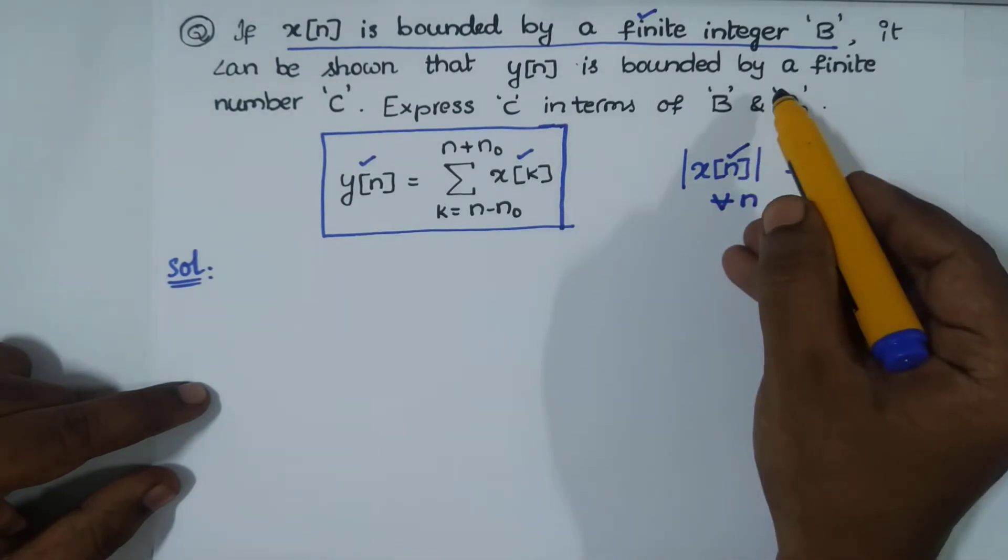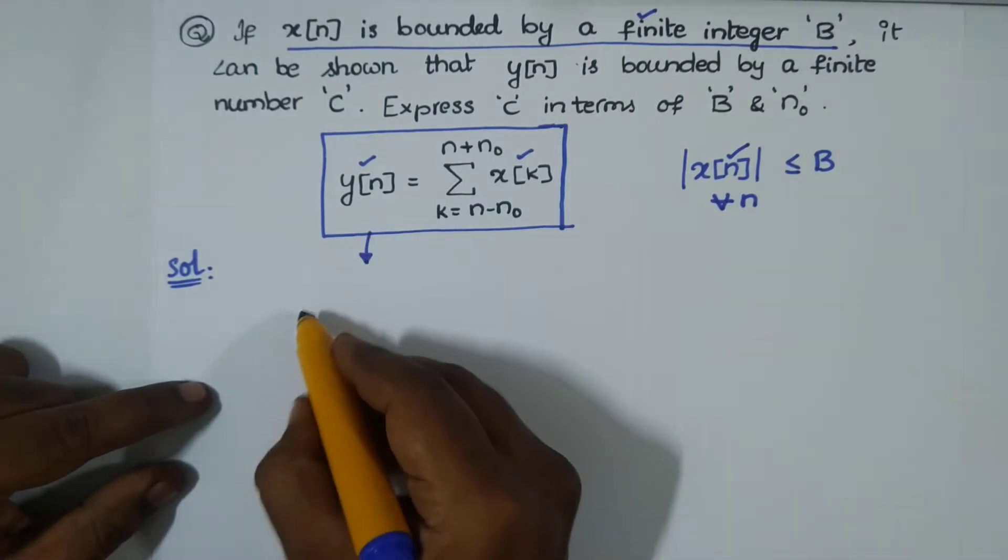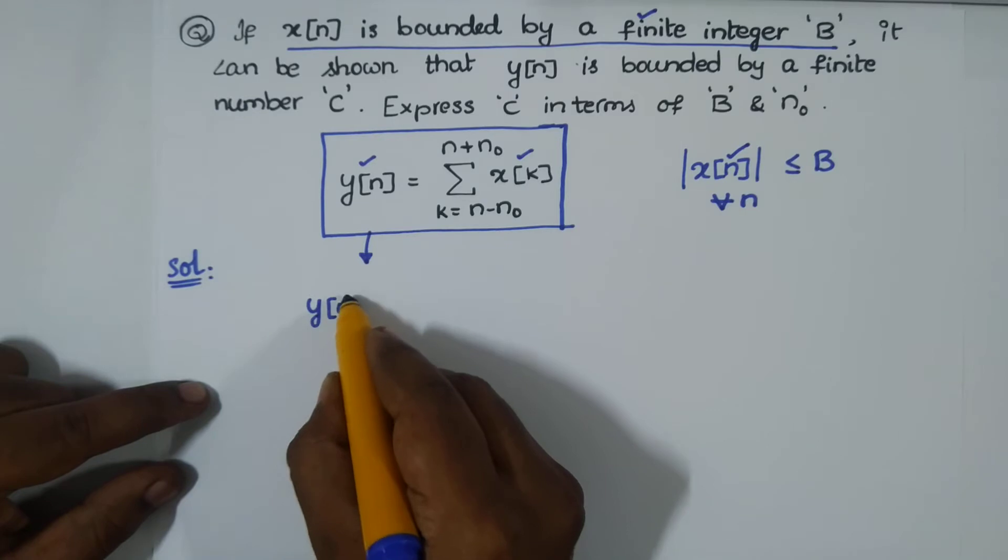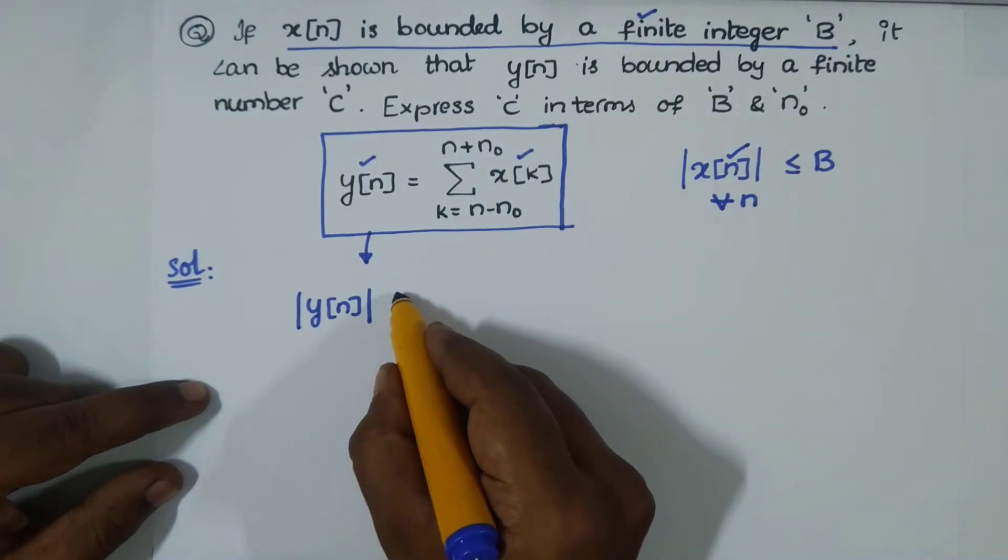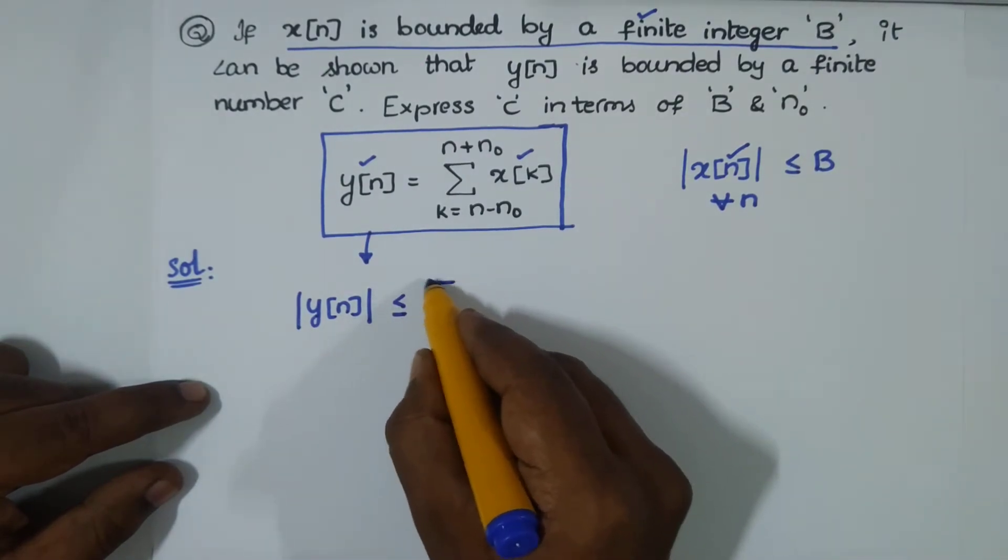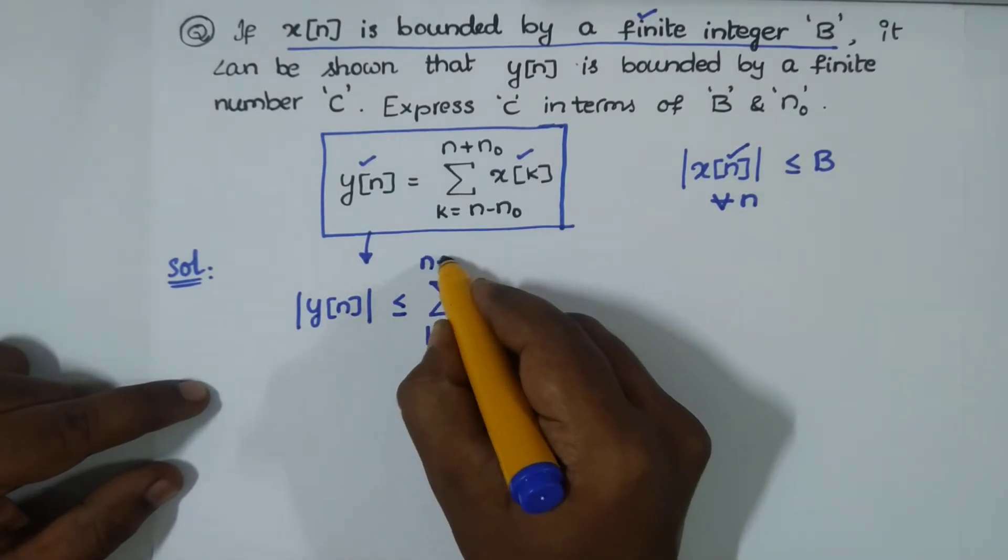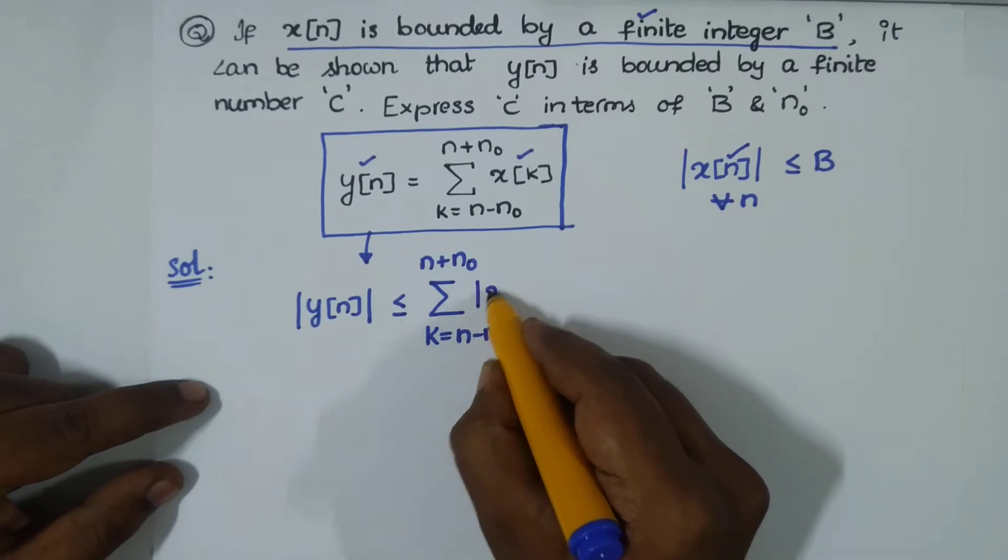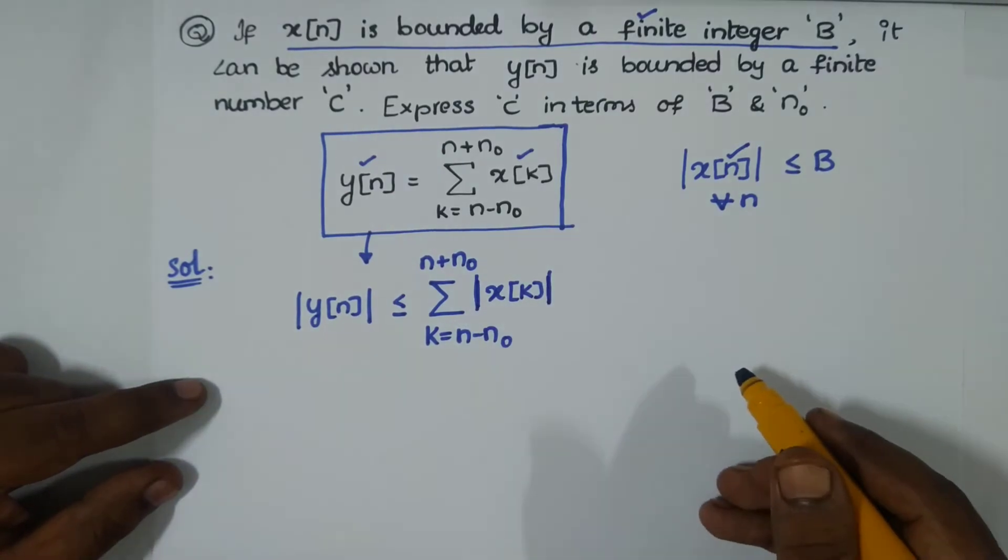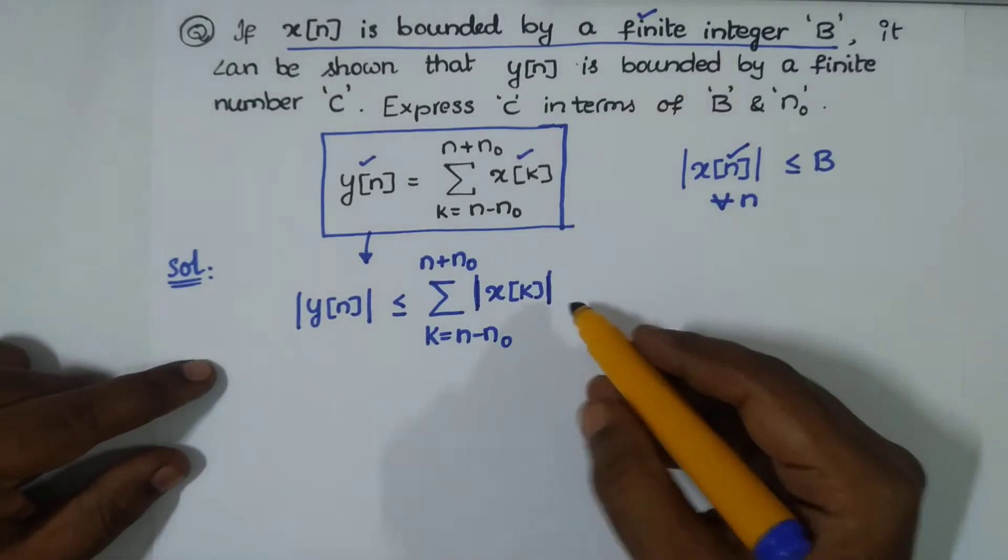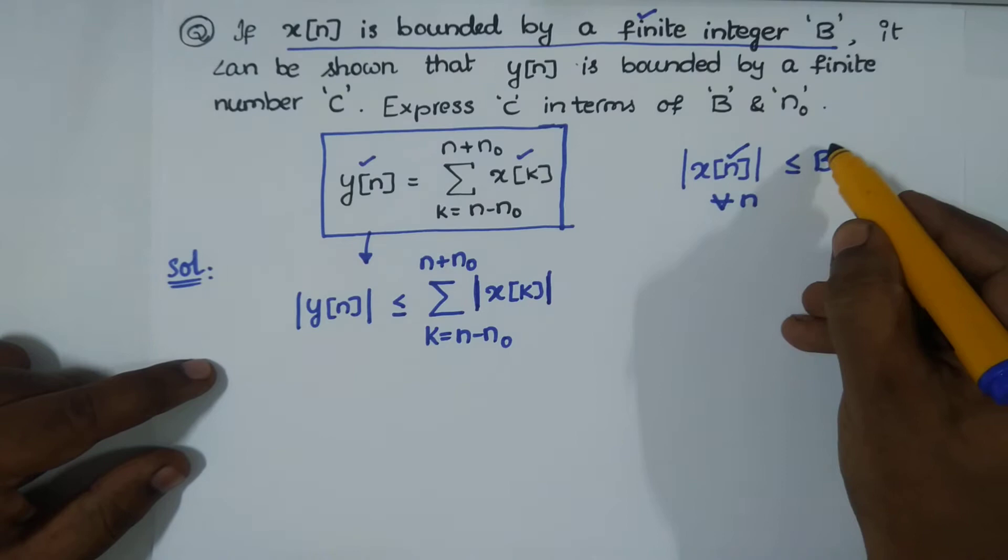It can be shown that y[n] is bounded by a finite number C. So my system is this. If I apply absoluteness on the whole system, this equality becomes inequality. This is k running from n minus n₀ to n plus n₀, and this quantity is x[k].